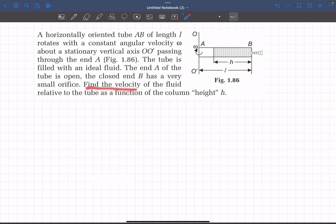We have to find the velocity of the fluid relative to the tube as a function of the column height h. In short, the length of fluid in the container is h, and we have to find the efflux velocity relative to the tube.